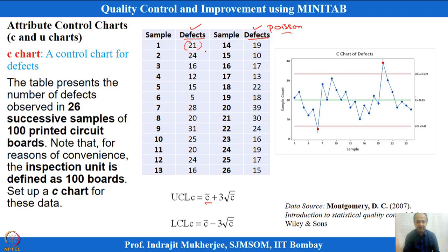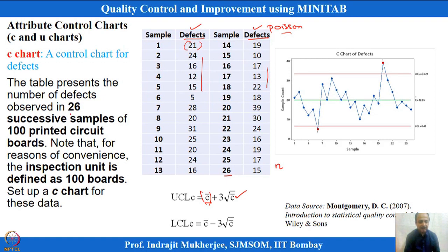For Poisson distribution, mean and variance are equal. C-bar (average defects) is calculated as the summation of all defect counts divided by total number of observations — here 26 samples. The UCL is C-bar + 3√(C-bar) and LCL is C-bar − 3√(C-bar). At time point T1, 100 boards were inspected and 21 defects found; at T2, 24 defects were found. The average of all defect counts gives C-bar, which is also the center line. N is constant, so it is not needed in the formula.